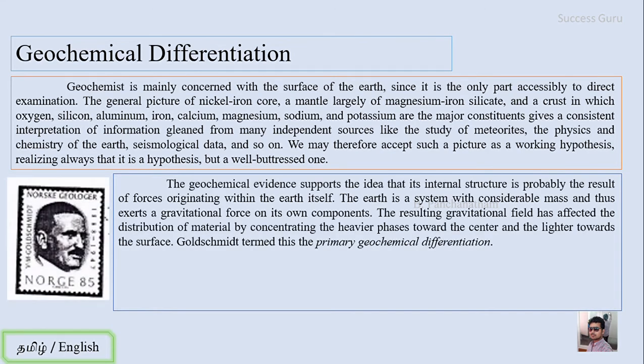The geochemical evidence supports the idea that its internal structure is probably the result of forces originating within the earth itself. The earth is a system with considerable mass and thus exerts a gravitational force on its own components. The resulting gravitational field has an effect in the distribution of material by concentrating the heavier phases towards the center and the lighter towards the surface.